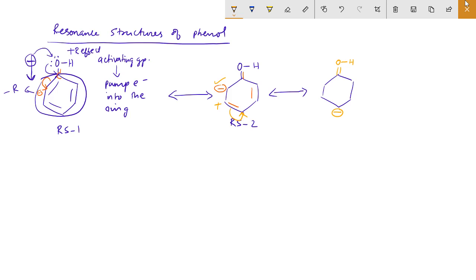This carbon will develop a positive charge. So, there is a minus and plus. This bond shifts. This is resonance structure 3.